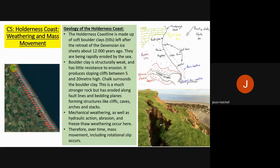Back to the Holderness Coast — it is made up of very soft boulder clays left behind after the Devensian ice sheet around a thousand years ago, being eroded rapidly by the sea. Boulder clay is structurally weak with little resistance, producing sloping cliffs and large fault lines or cracks. The surrounding chalk is much stronger but has been eroded away, exposing the softer clay. Mechanical weathering including hydraulic action, abrasion, and freeze-thaw also occur, leading to mass movement including rotational slip, clearly visible in the images.